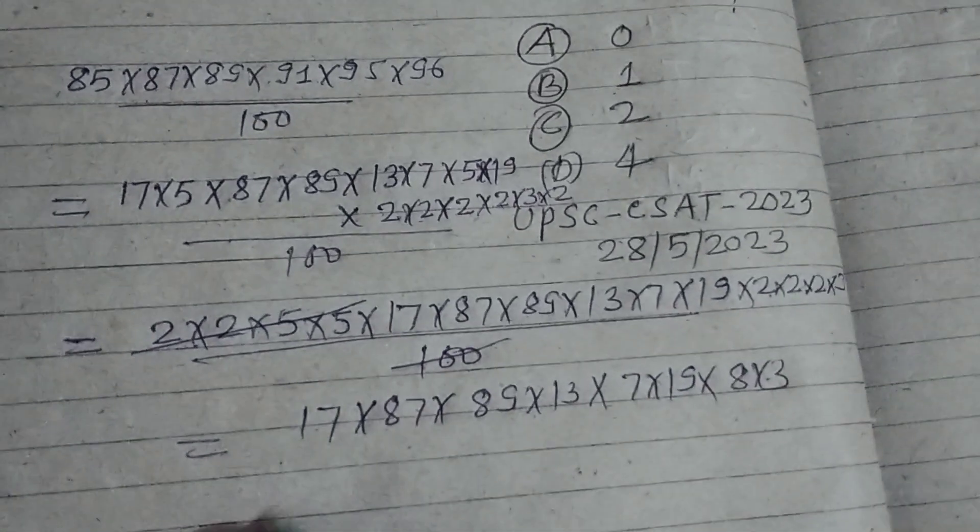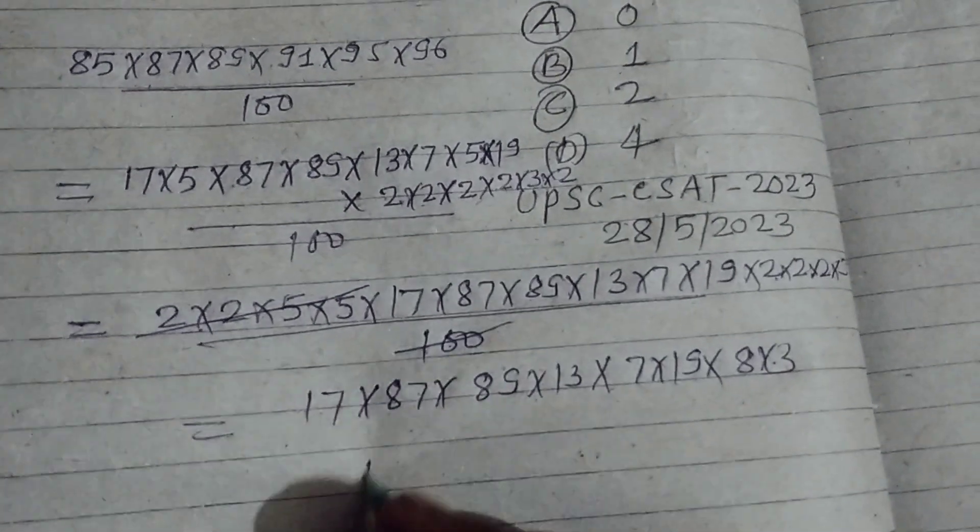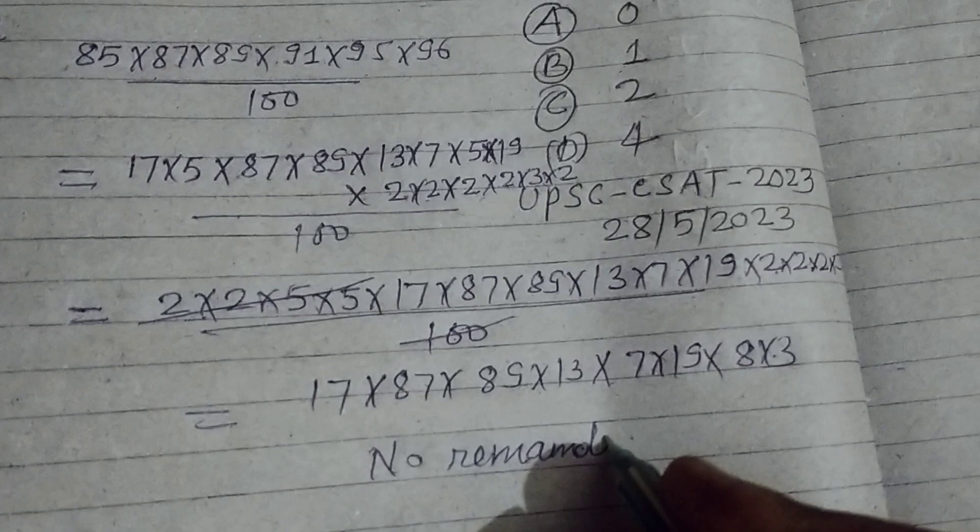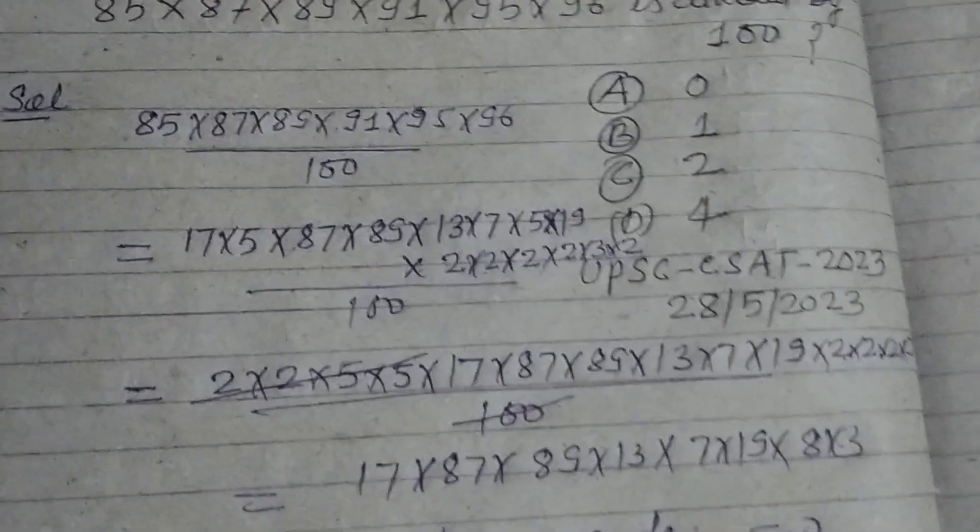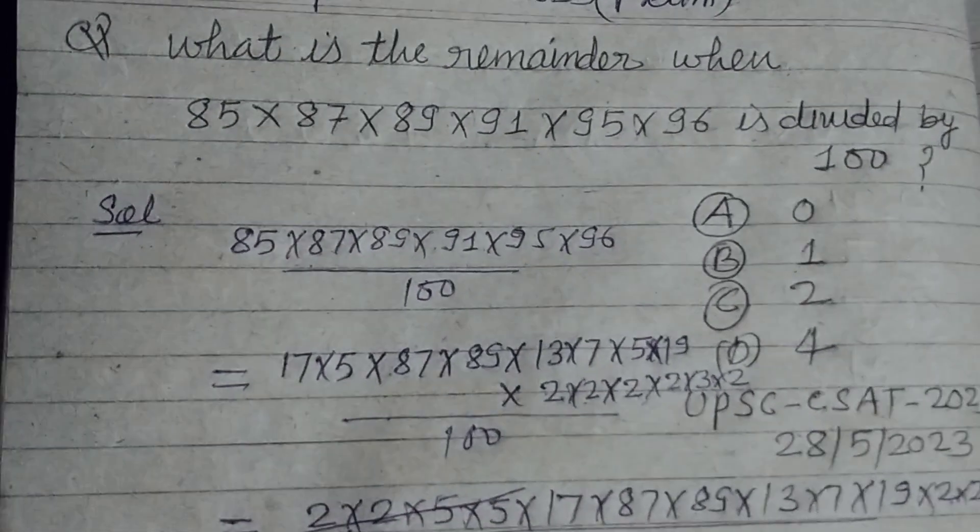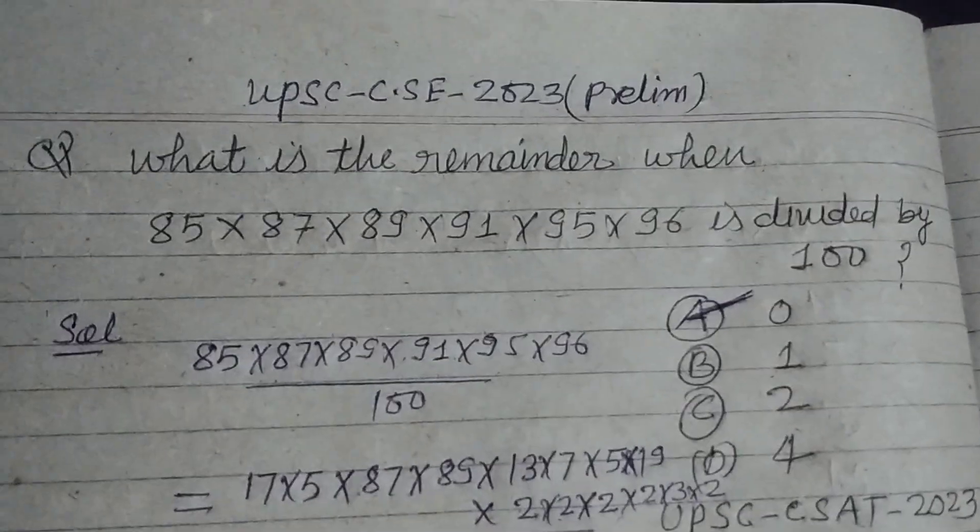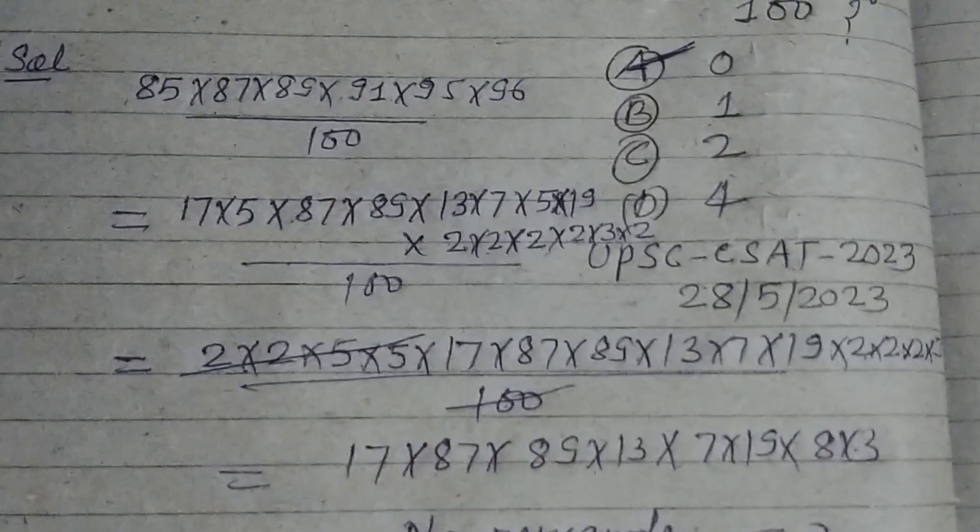There is no remainder. It is completely divisible, no remainder, or remainder is 0. The number is completely divided by 100, therefore remainder is 0. So A is the correct option. I hope you got it, please like the video, subscribe to the channel, thanks for watching.